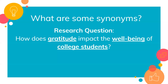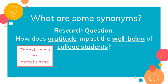Once you have identified those main topics, you have to start thinking about synonyms. Why would we do this? Because you never know exactly how an author may have phrased something, and databases are so specific that they only search for the words you actually type in. So if you use the word gratitude, the database only searches for that specific word. But what if an author used thankfulness or grateful? Even though these words mean the same thing, the database won't find them, and you may miss out on a great article. So make sure you make a list of synonyms for your keywords.